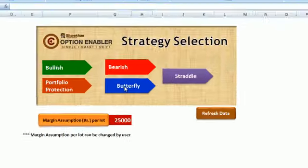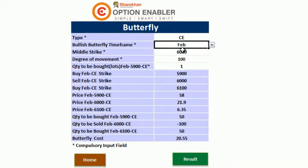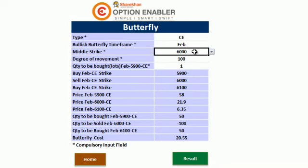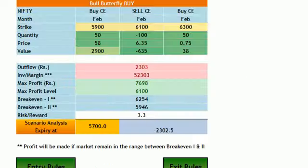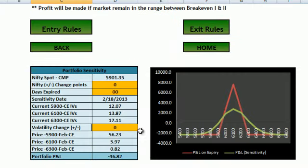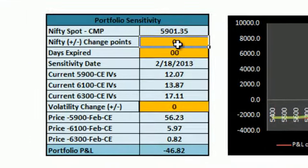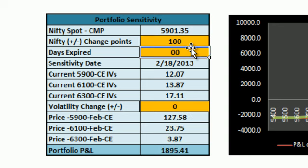The third strategy which we are discussing is butterfly. We are doing a 5900-6100-6300 butterfly. Let's punch in those three levels into the Options Enabler and see what data points it gives us. Again, Portfolio Sensitivity Analysis — where you need to punch in those three data points — and the probable profit or loss scenario will be displayed to you so that you can take an informed decision.